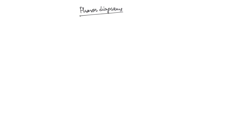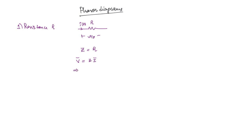First we will take only single individual circuit elements. Starting with resistance: for a resistor, we already know that the impedance is equal to R, which is a purely real part. So the relation between the voltage phasor and current phasor is V̄ = Z·Ī = R·Ī. Since R is only a constant with no imaginary part, V̄ and Ī are going to have the same phase.